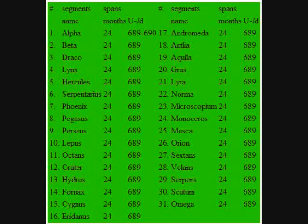Regular segment: 689 eye sols. Irregular segment: 690 eye sols. Common year: 31 segments regular. Leap year: 30 segments regular, one segment irregular.